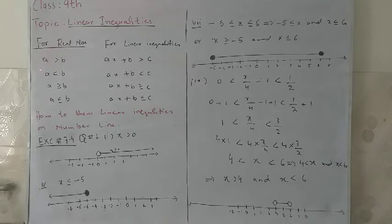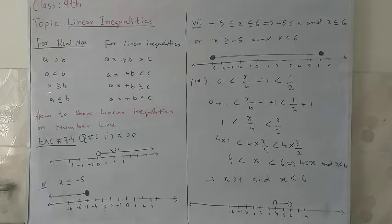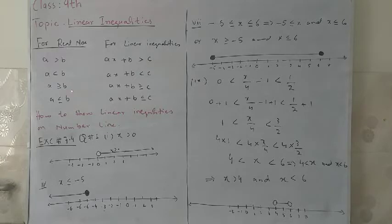A greater than B, like 5 greater than 4. A less than B for any real number, like 4 is less than 5. For A greater than or equals to B, when we have two real numbers which will coincide with B or lie on the right hand side of B. Similarly, the fourth option is when A is less than or equals to B, when A lies on the left of B or it will coincide with B.